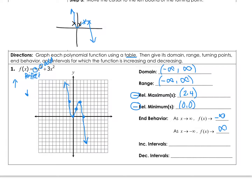For the increasing and decreasing intervals, moving left to right: this function decreases from negative infinity until it hits the local minimum at x = 0. It then increases from 0 to the local maximum at x = 2, remembering we're talking about x values only. Then it decreases from 2 to infinity. So it has two decreasing intervals and one increasing interval.